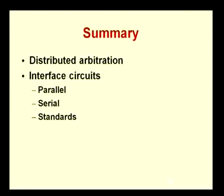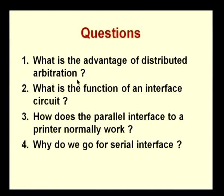To summarize: we have looked at the distributed arbitration mechanism used for DMA, parallel and serial input-output interface circuits, and the need for standards with a typical example of how different standards are used inside a processor. Questions to consider: (1) What is the advantage of distributed arbitration? (2) What is the function of an interface circuit? (3) How does the parallel interface to a printer normally work? (4) Why do we go for a serial interface? Thank you.